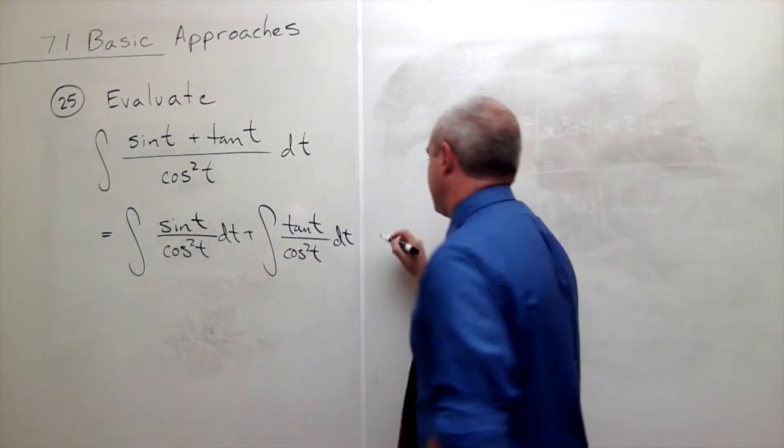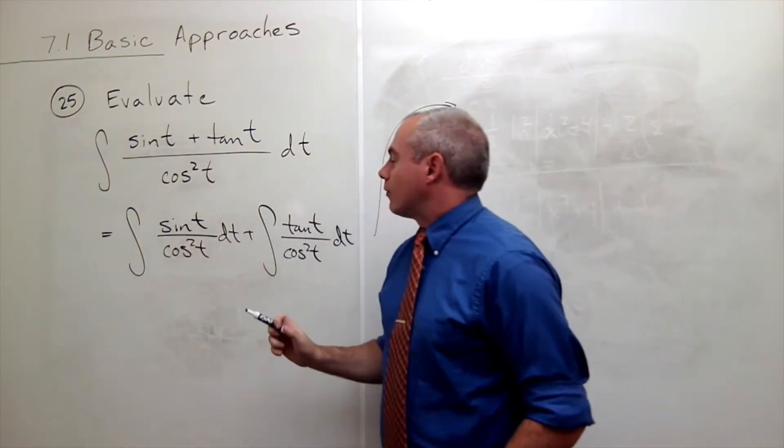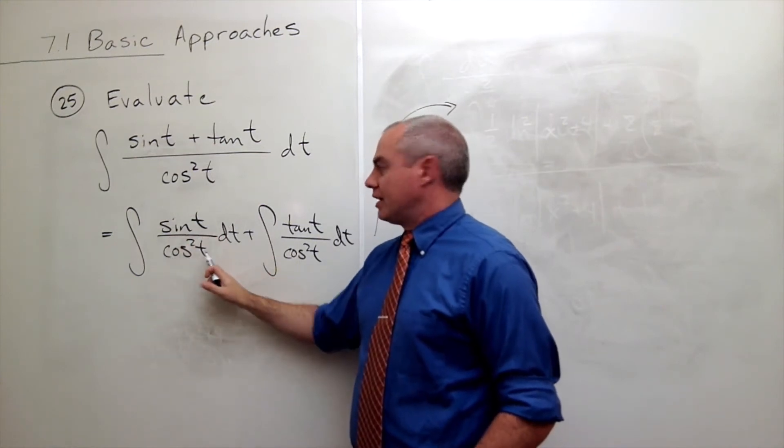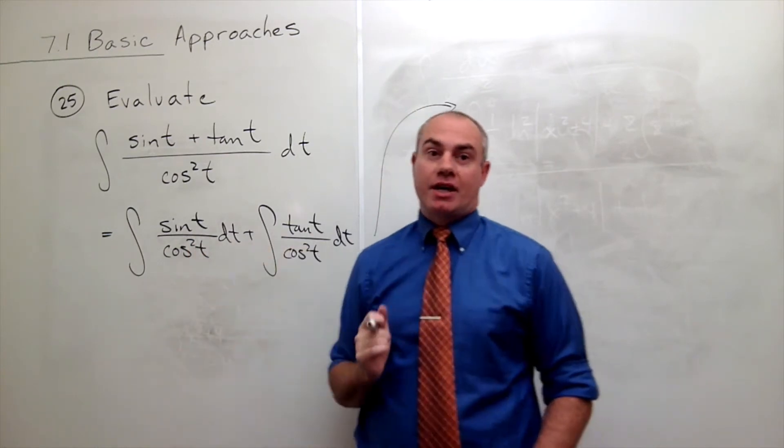Now that I've rewritten these, I can look at this for a second. Sine t over cosine t is tangent t, and also on the bottom I have an extra cosine t.